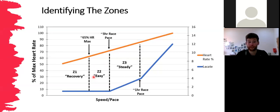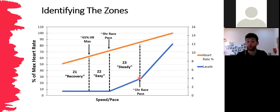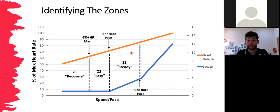Zone three, or steady, sits between the lactate threshold and the lactate turn point. Lactate has gone above baseline but hasn't spiked really high. The upper boundary correlates roughly with one-hour race pace. Heart rate runs from about 75% up to 85–87% of max. You can still talk, but only short sentences — you couldn't sing or hold an in-depth conversation. It's a steady effort; you can sustain it for a long period but it's noticeably more stressful.